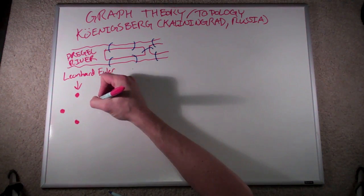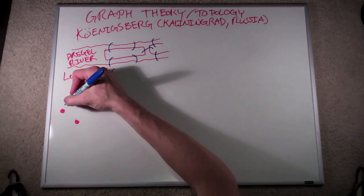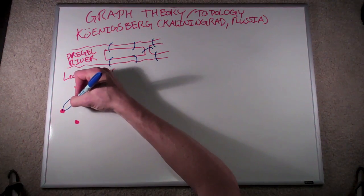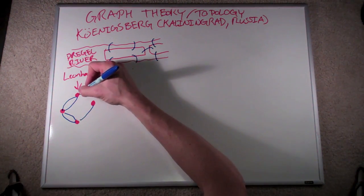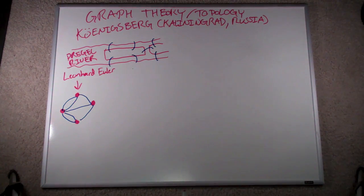He realized that the path you take over land is irrelevant, so he reduced each landmass down to a dot, four of them, one for each shore, one for each island. He then connected together each of these dots via a series of line segments that were meant to stand in for the bridges.